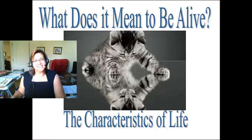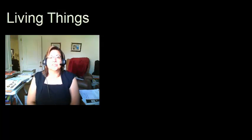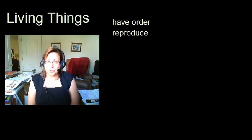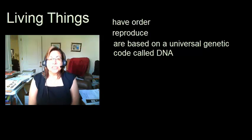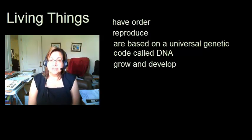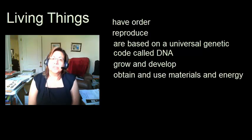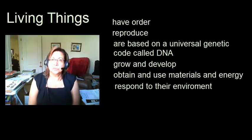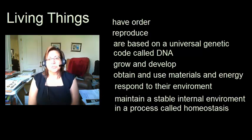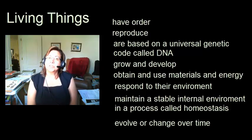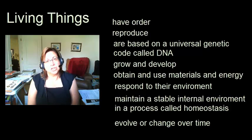Did we answer the question — what does it mean to be alive? Let's go over those characteristics of life one more time. Living things have order in the form of cells. They reproduce. They are based on a universal genetic code we call DNA. They grow and develop. They obtain energy and transform it into usable energy. They respond to the environment. They maintain a stable internal environment in a process called homeostasis. They evolve and change over time. Okay, that covers it.